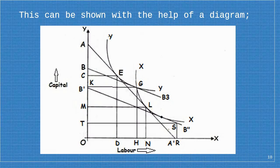This theory can be shown with the help of a diagram. Labor is measured on the X-axis and capital on the Y-axis. X is the capital-intensive commodity and Y is the labor-intensive commodity. XX is the isoquant of commodity X and YY that of commodity Y, and they are the same for both countries A and B. The relative factor prices in country A are given by the factor price line AA1. Assuming each isoquant represents one unit of output, one unit of Y will be produced with OC amount of capital and OD amount of labor at point E, where the isocost line AA1 is tangent to isoquant YY. One unit of commodity X in country A requires OM amount of capital and ON amount of labor.